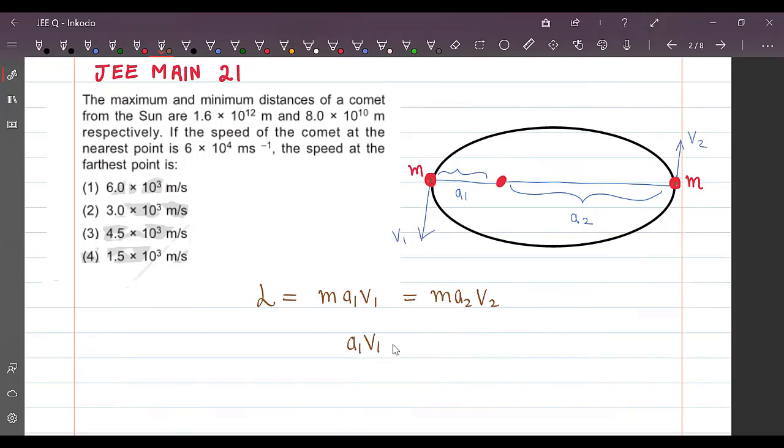So I can write a1 v1 equals to a2 v2. What I need to find is the speed at the farthest point, that is the value of v2. So v2 can be written as a1 by a2 into v1.